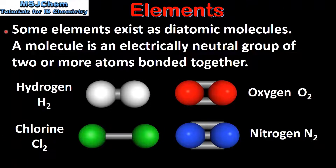Some elements exist as diatomic molecules. A molecule is an electrically neutral group of two or more atoms bonded together. Examples of diatomic molecules include hydrogen, chlorine, oxygen and nitrogen.